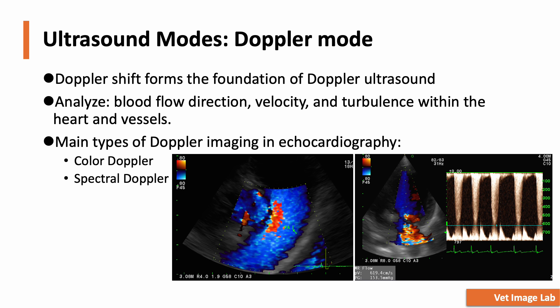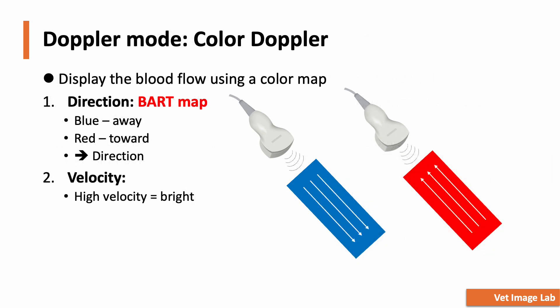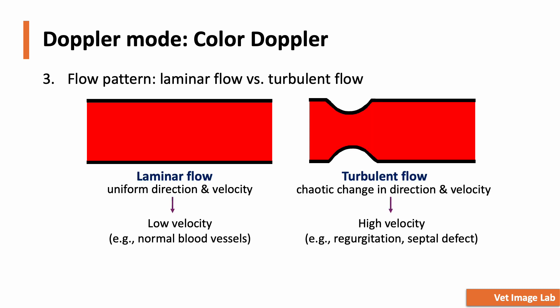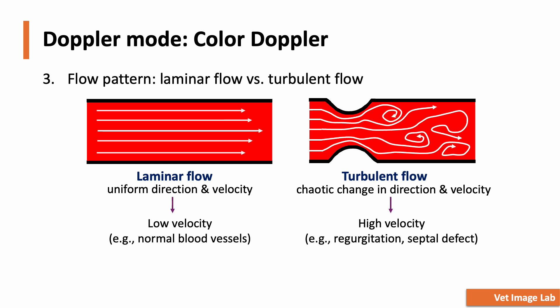Using this principle, we can apply two main types of Doppler imaging: color Doppler and spectral Doppler. Color Doppler helps us assess two key aspects of blood flow — direction and velocity. Direction is determined using the BART map: blue away, red toward — telling us whether blood is moving toward or away from the transducer. Velocity is indicated by the brightness of the color, with higher velocities resulting in brighter shades of red or blue. Color Doppler can also assess flow pattern: laminar flow means blood moves smoothly in parallel layers with a relatively uniform velocity, observed in normal vessels and heart chambers. However, in conditions like valvular regurgitation or septal defects, blood flow becomes turbulent.